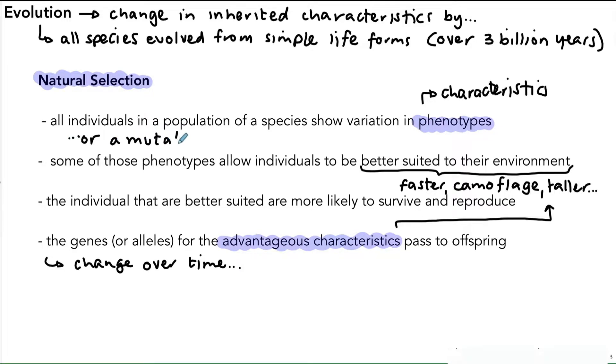One point to make is we have individuals with variation, but we might have a mutation that occurs that results in an advantageous characteristic. So it could be as a result of variation or it could be as a result of an advantageous characteristic from a mutation that could lead to something being faster, having better camouflage, being taller, or any number of features.